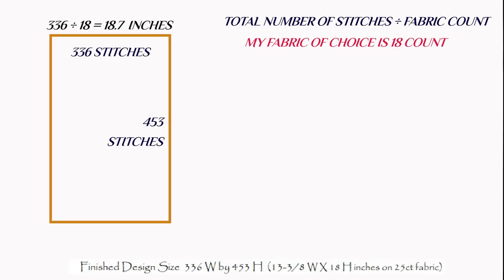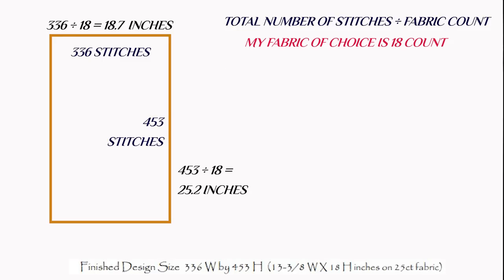Now I move on to my height. I take 453 and divide by 18, which gives me 25.16 inches. Again, because the six is higher than five, I round that up — instead of 25.1 it becomes 25.2. So I now know the height of my design itself is going to be 25.2 inches high. That is the design size. But we don't stop there.